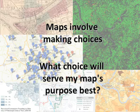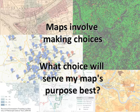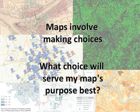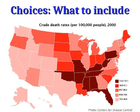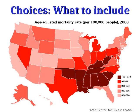So maps involve making choices, and you have to think about what the purpose of the map is in order to know what choices you should be making. One of the key choices is what to include — what information is going to go on your map. Here's an example of a map of the United States showing the crude death rate: the number of deaths per 100,000 people per year for each state. Here's another map showing what's called the age-adjusted mortality rate — also a rate per 100,000 people, a rate of deaths.